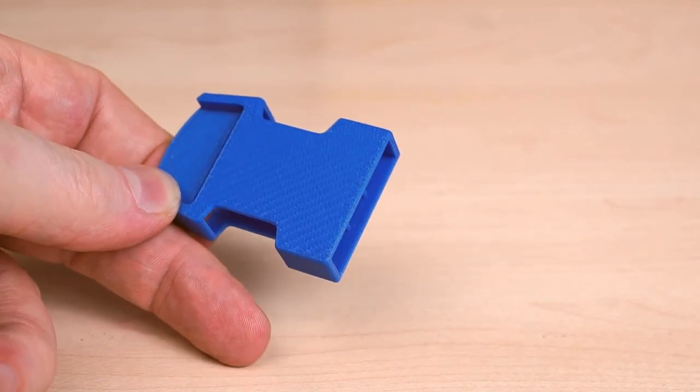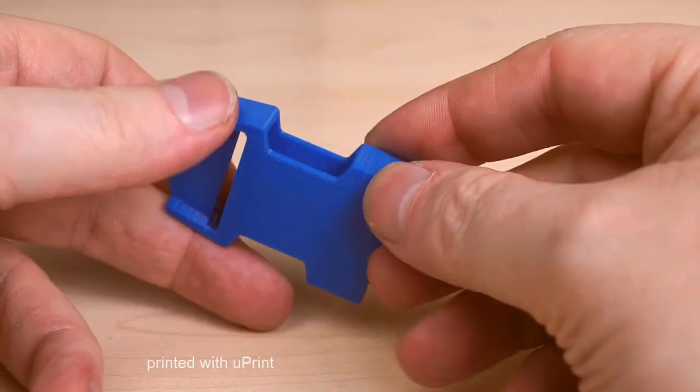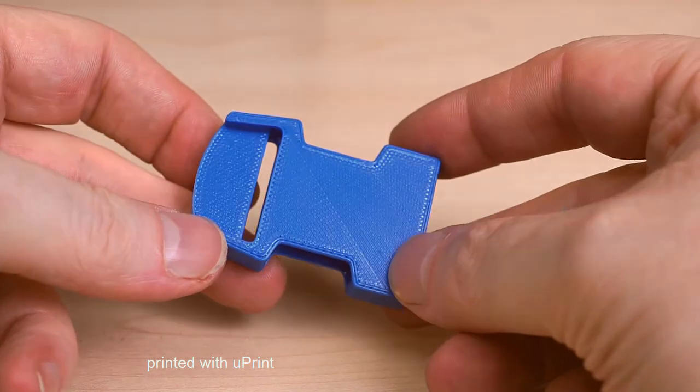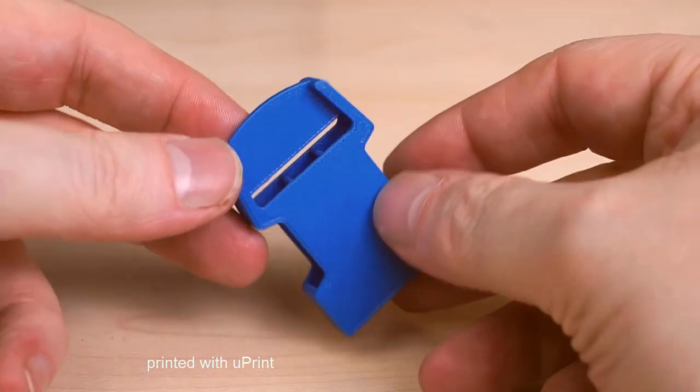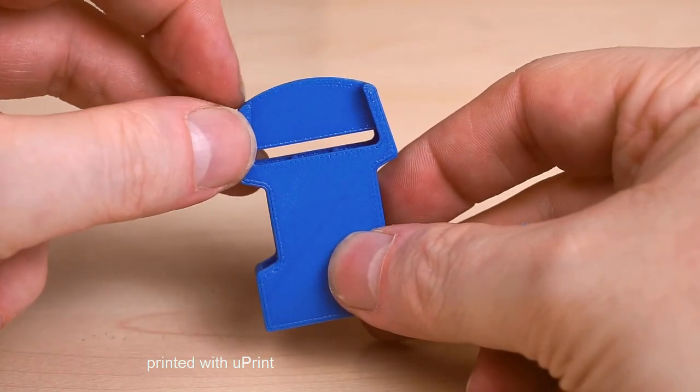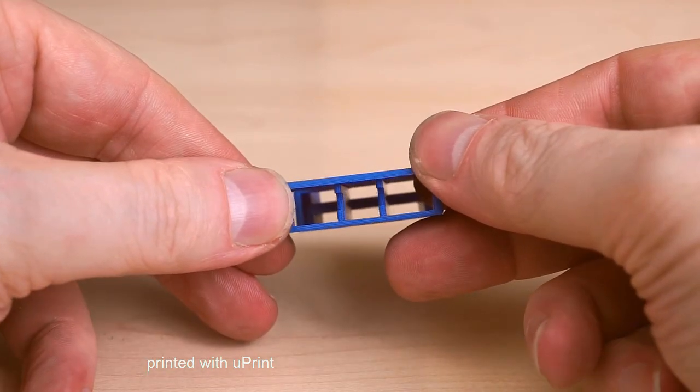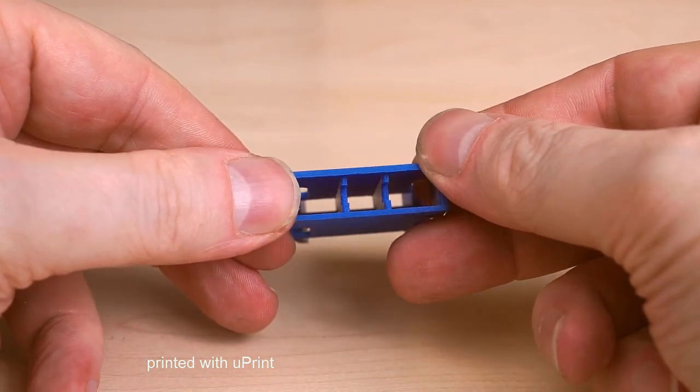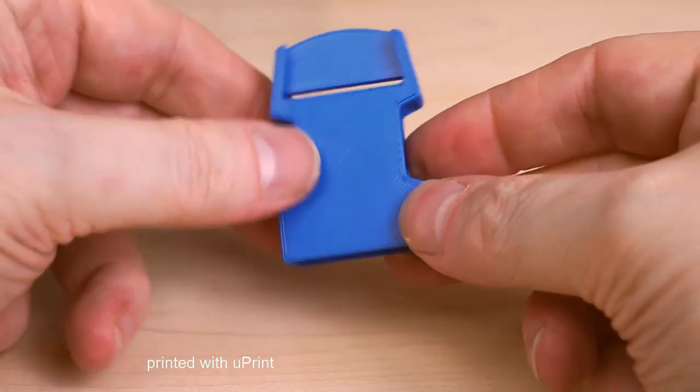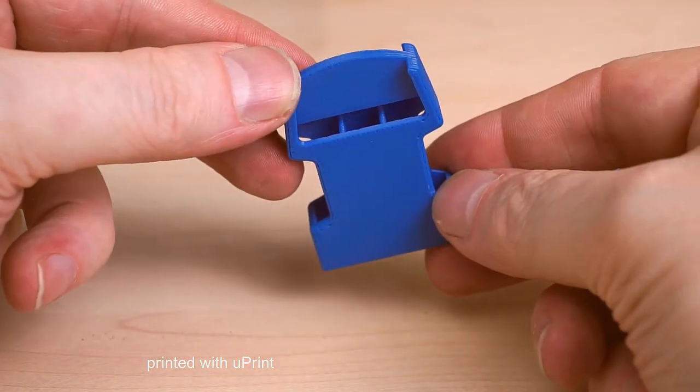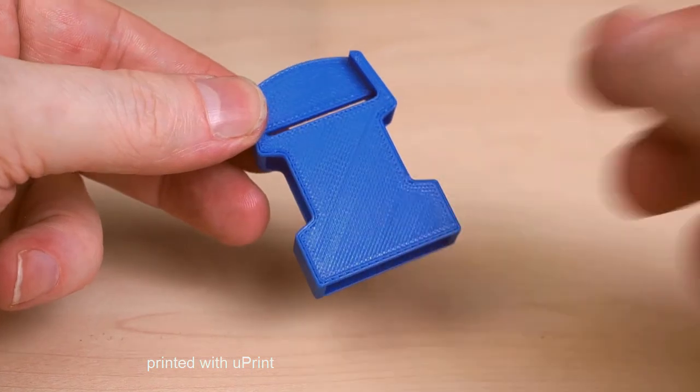In our tests, we were unable with the Cube Pro Trio to produce comparable quality as with the Uprint SE Plus, even when giving considerable attention to the orientation and experimenting with various print settings. In practice, there was too much time and effort to achieve any sort of usable models of the belt buckle from the test file we were using.